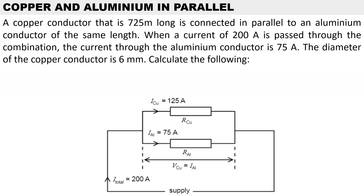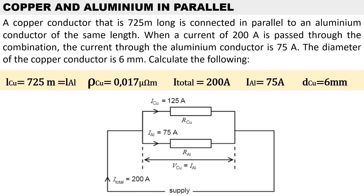In this example, we have a copper conductor and an aluminum conductor connected in parallel — a typical exam-type question for N4 Electro-Techniques. A copper conductor that is 725 meters long is connected in parallel to an aluminum conductor of the same length. When a current of 200 amps is passed through the combination, the current through the aluminum conductor is 75 amps and the diameter of the copper conductor is 6 millimeters. Looking at the circuit diagram, the current in the copper branch is 125 amps and the current in the aluminum branch is 75 amps, giving a total current of 200 amps. The resistivity of copper is 0.017 micro ohm-meters.